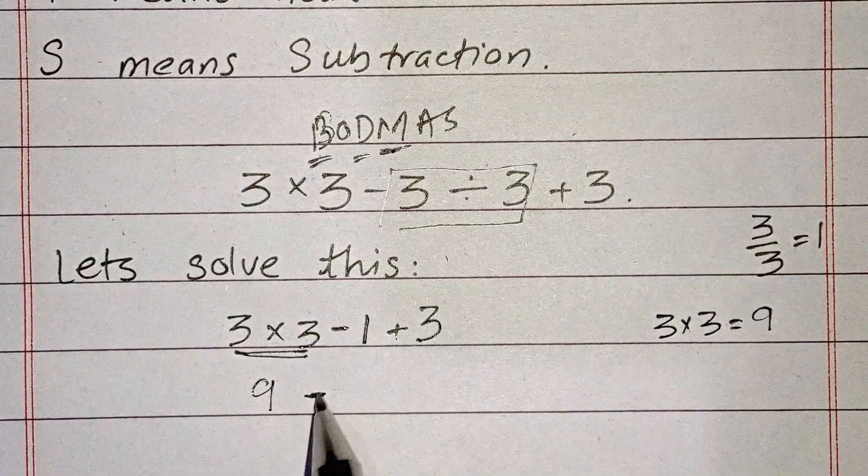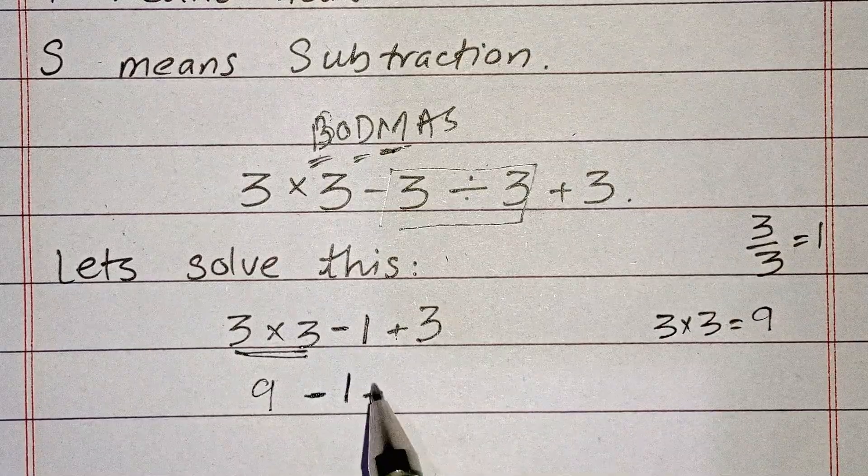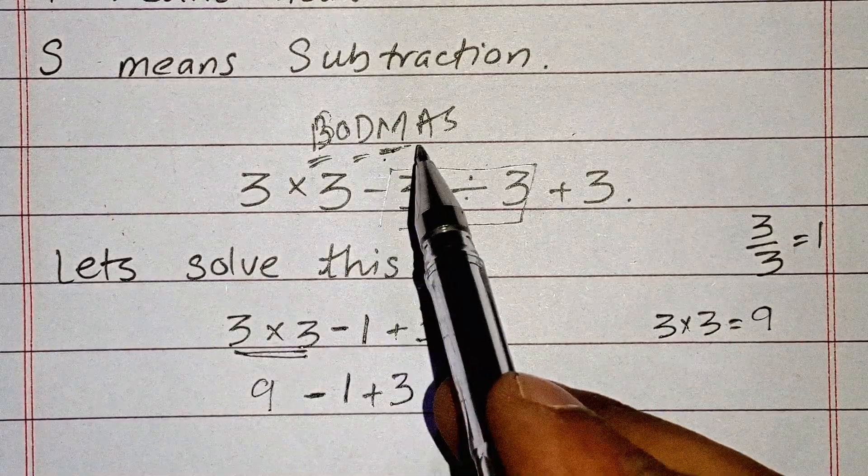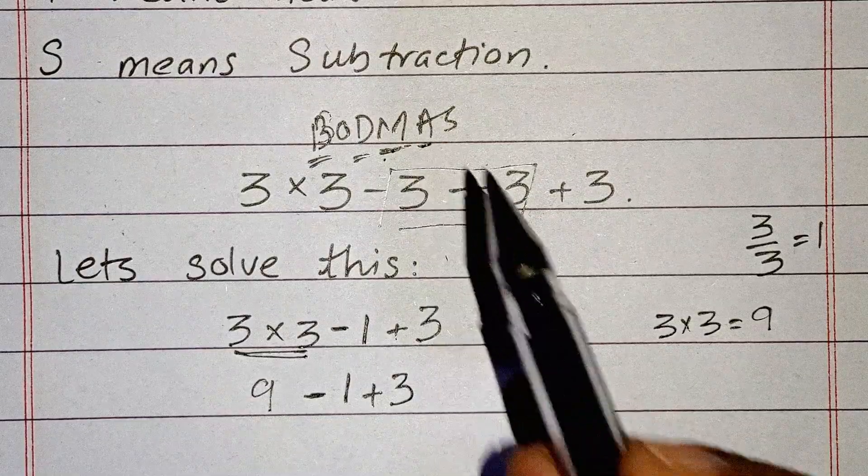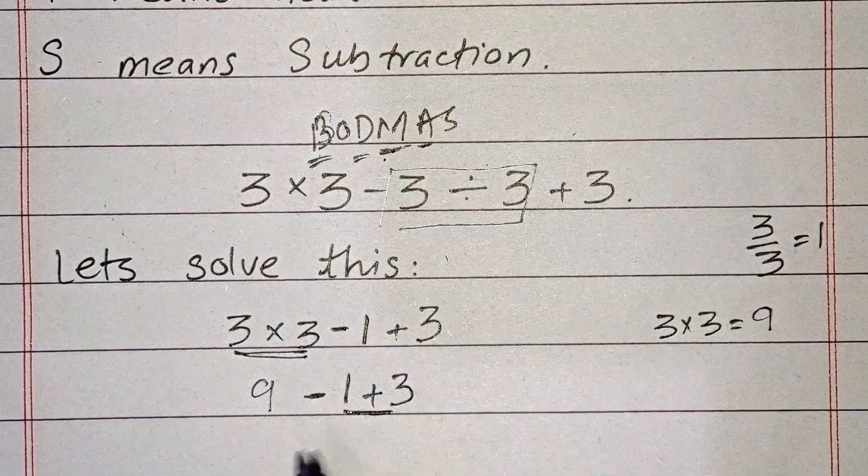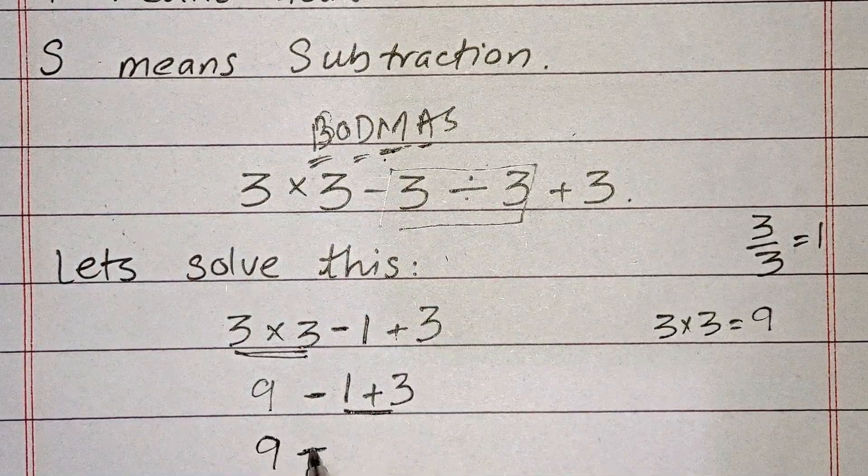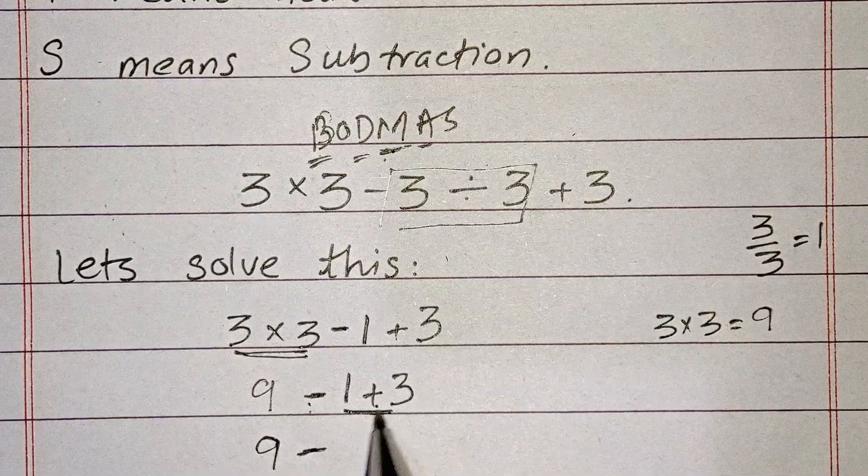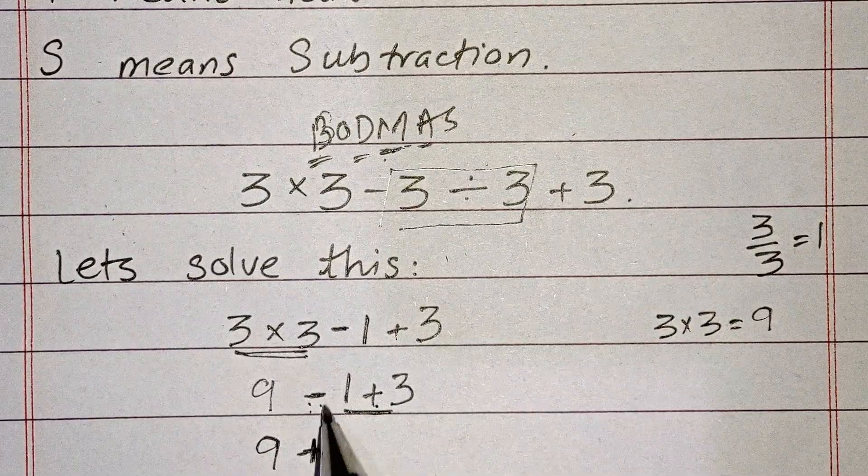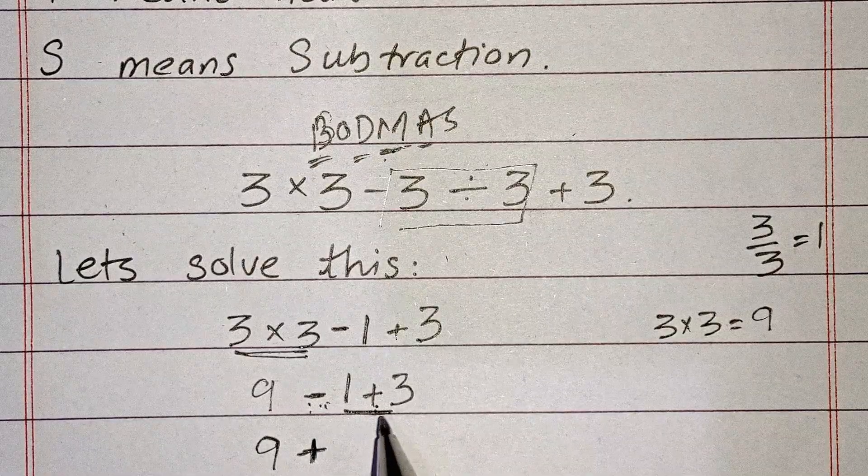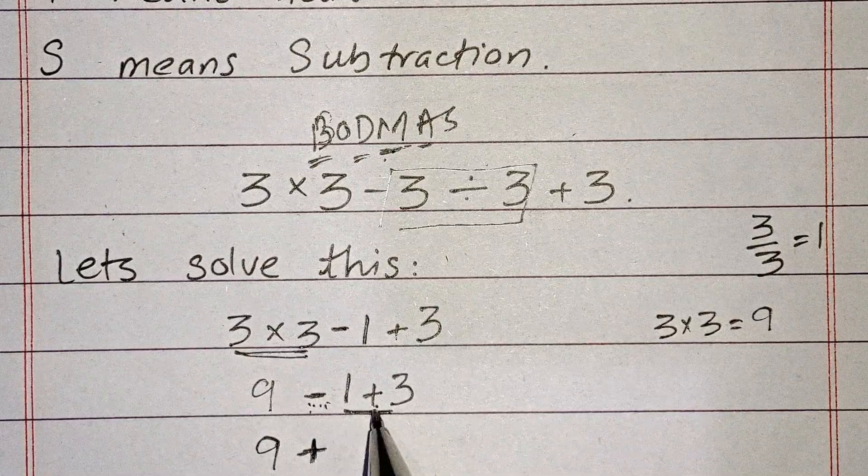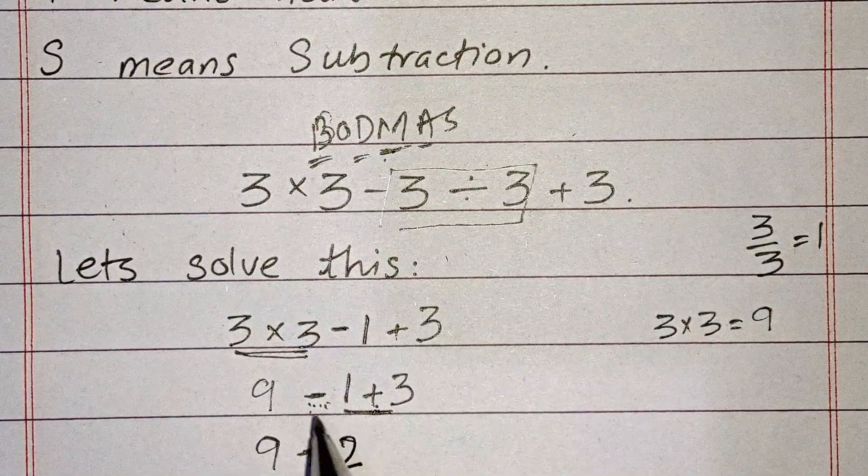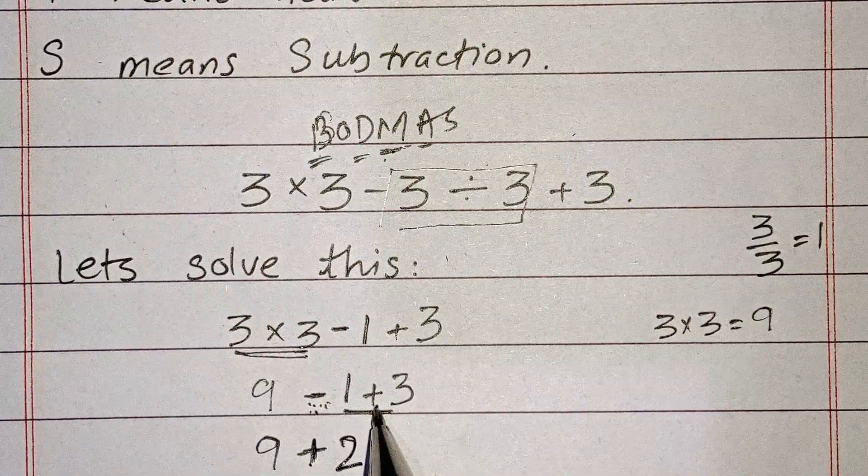So we have 9-1+3. After doing multiplication, you have to go for addition. When you add these with mixed signs, the greater value determines the sign. So -1+3 equals +2.